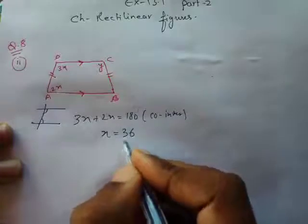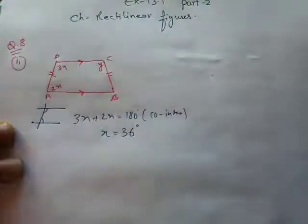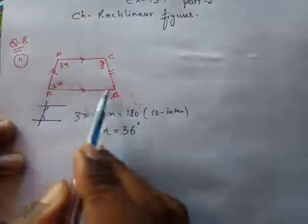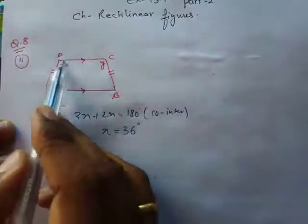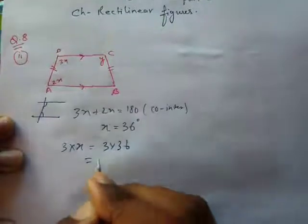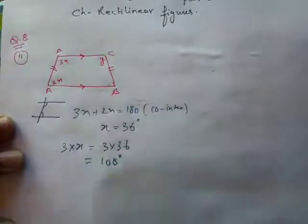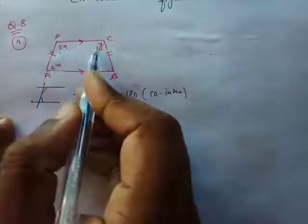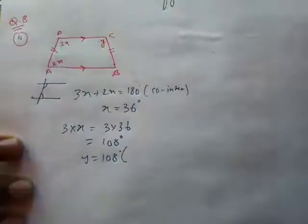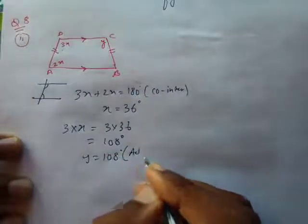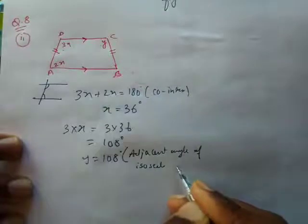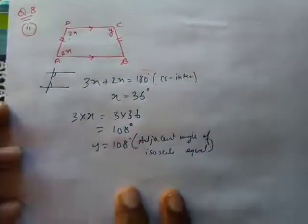So 180 divided by 5 gives x = 36°. Now we need to find y. In an isosceles trapezium, adjacent angles are equal — this angle equals that angle. So 3 × 36 = 108°. Since this angle is 108°, y is also 108°. The reason you write in the bracket is: adjacent angles of an isosceles trapezium are equal.